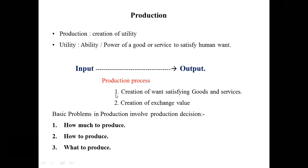And the third decision is what to produce. This means we have to decide what to produce for the market and which product to focus on. So input means what we use in any production function, and output means the product we produce.